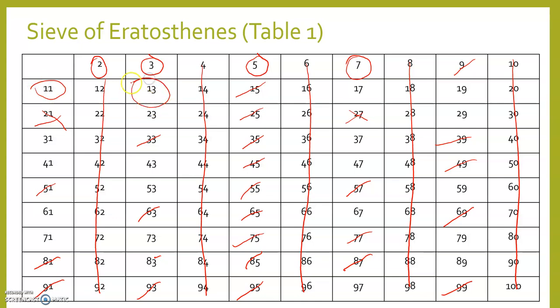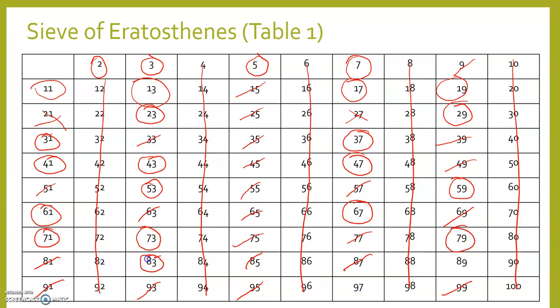We're going to circle what's left: 11, 13, 17, 19, 23, 29, 31, 37, 41, 43, 47, 53, 59, 61, 67, 71, 73, 79, 83, 89, and 97. Those are the prime numbers from 0 to 100.